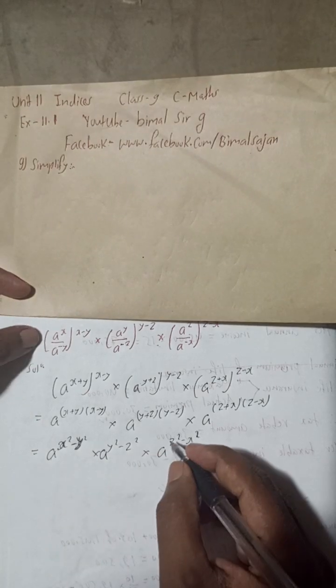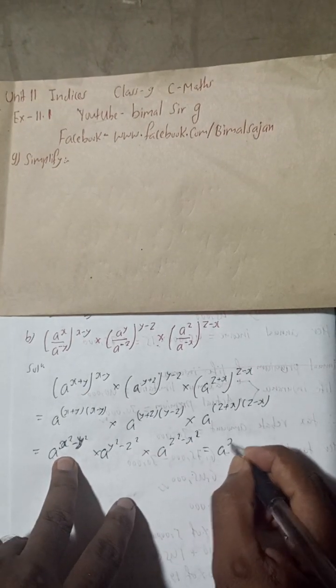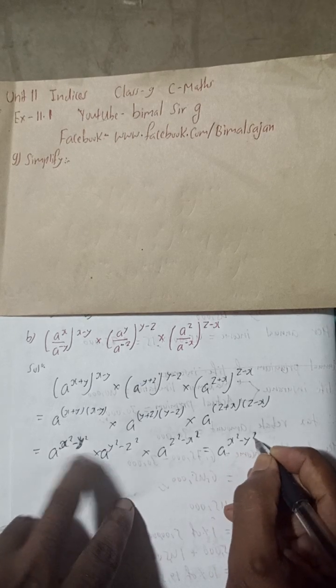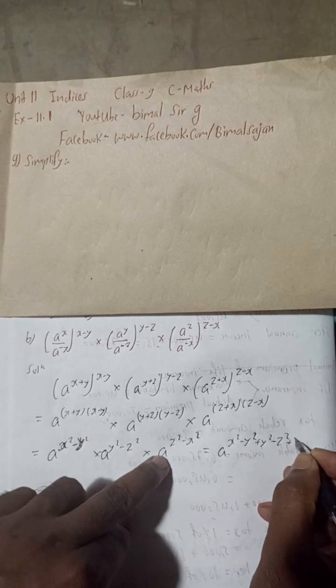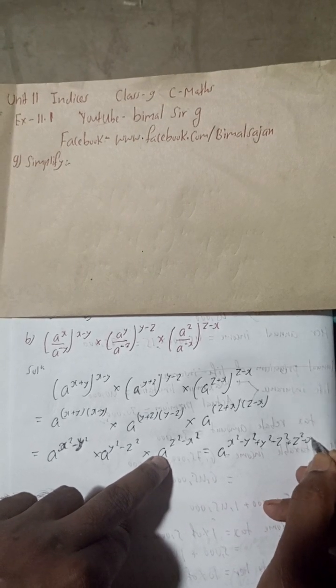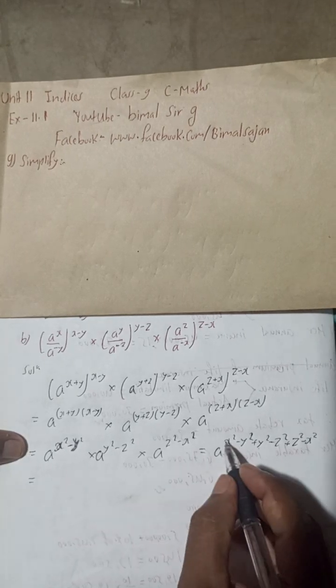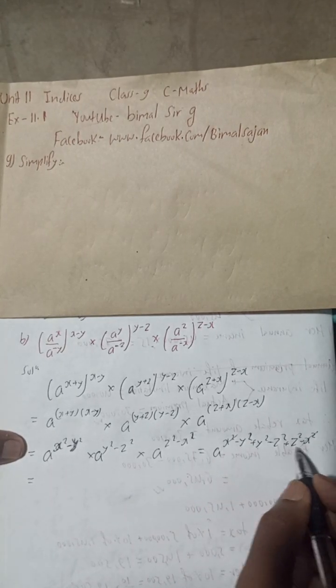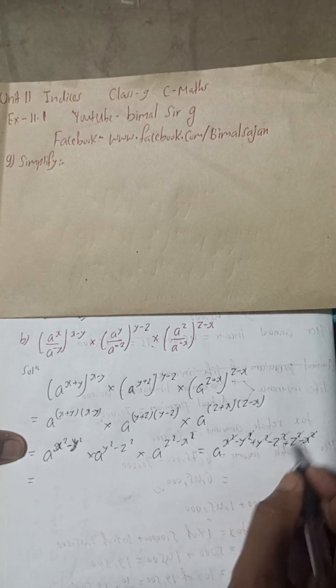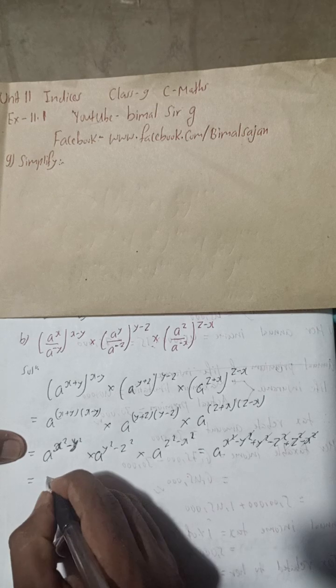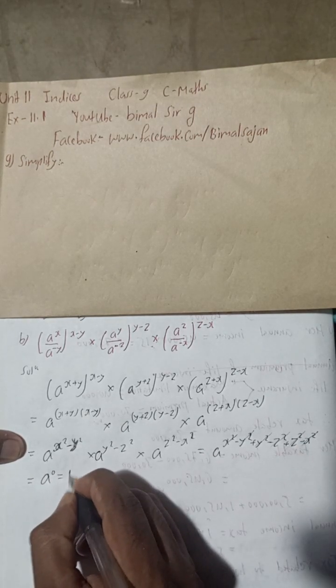Now what you can do, we can add the powers. Adding means plus will be plus, minus minus. So this is here a to the power x squared minus y squared plus y squared minus z squared plus z squared minus x squared. So plus x squared minus x squared cancel.